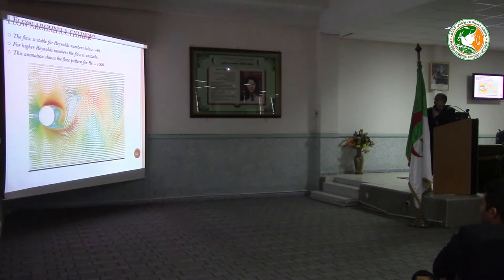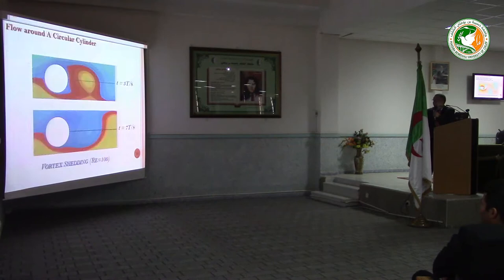The flow is stable for Reynolds numbers below 40. For higher Reynolds numbers the flow is unstable. This animation shows the flow pattern for Reynolds number 1,000. I show flow around the circular cylinder 14 times to show vortex shedding.